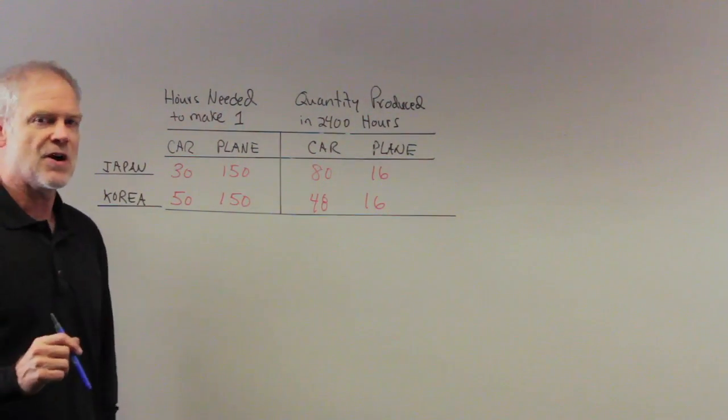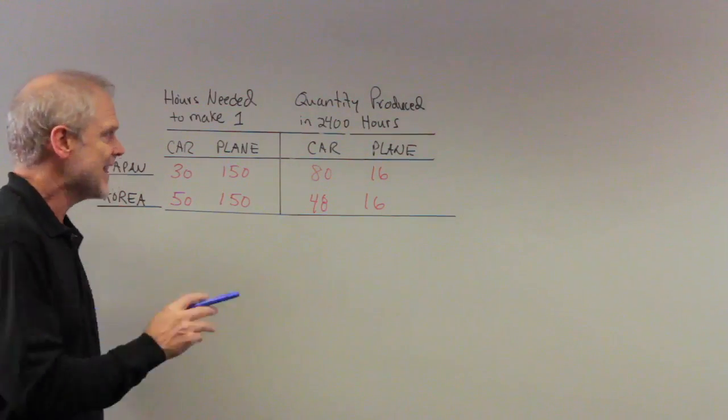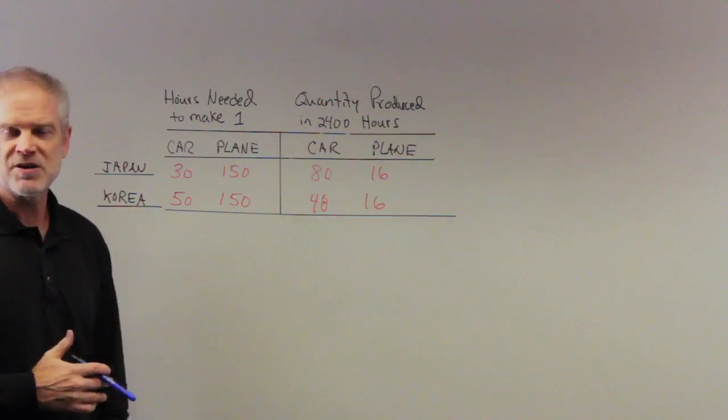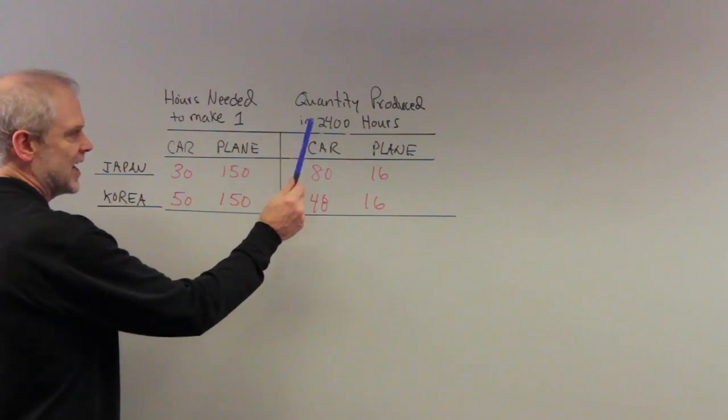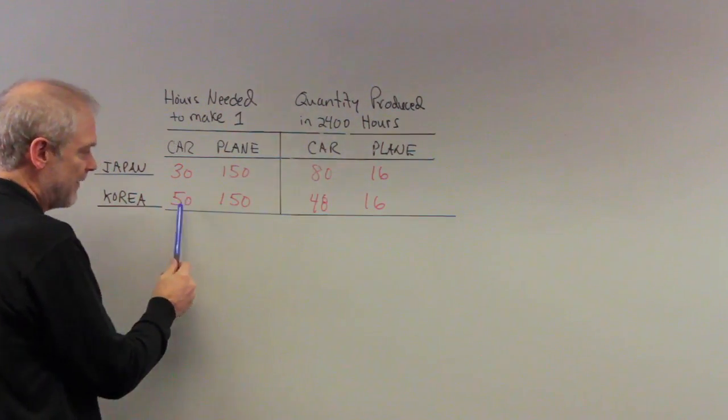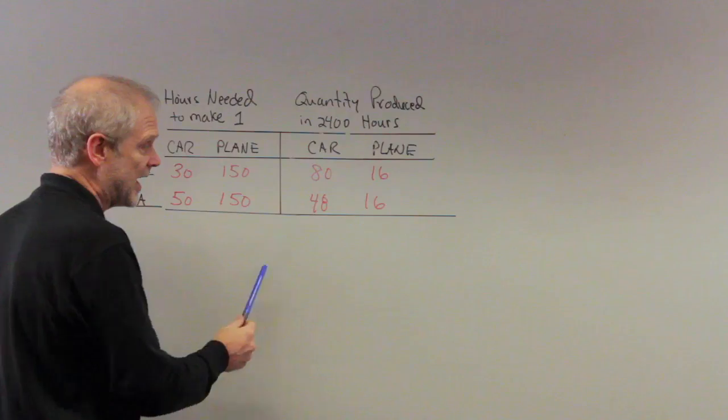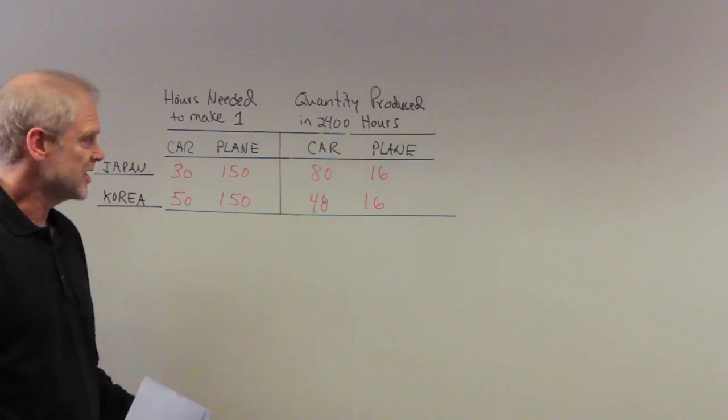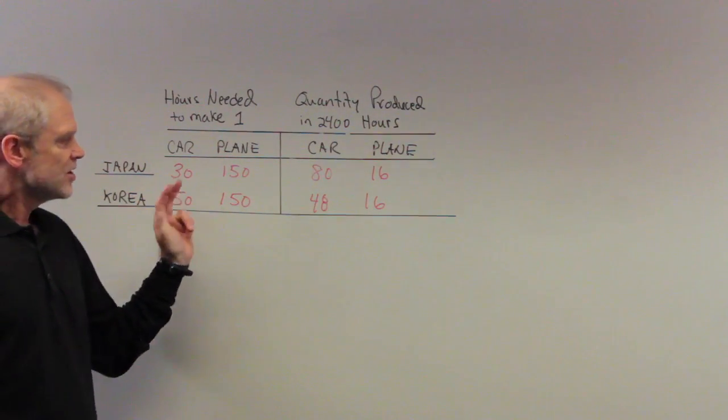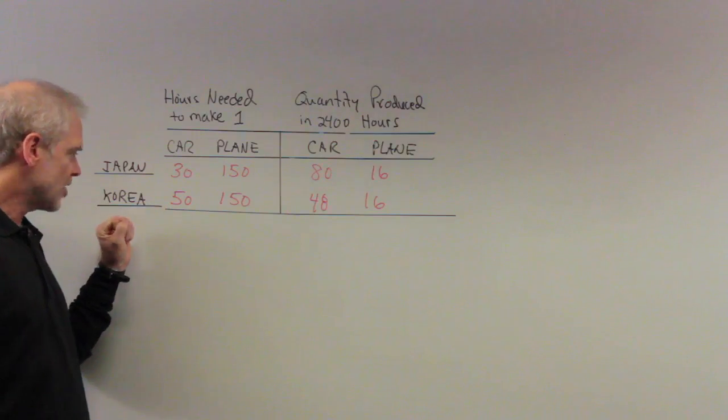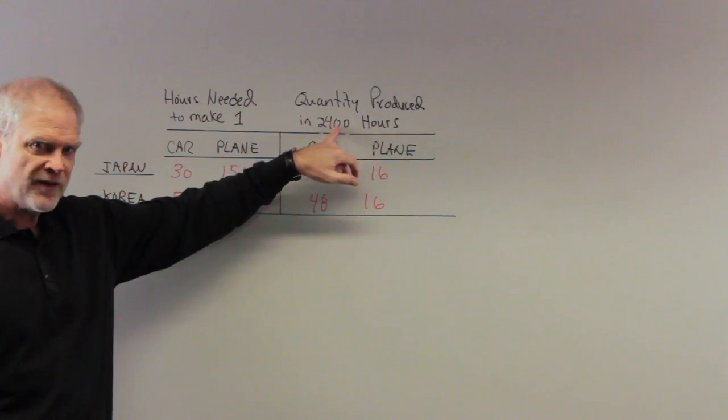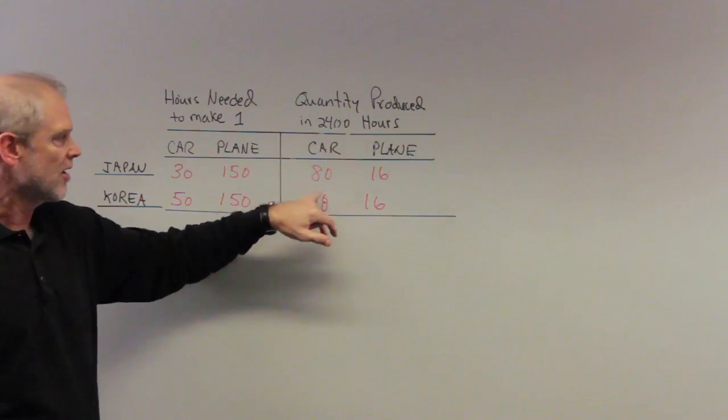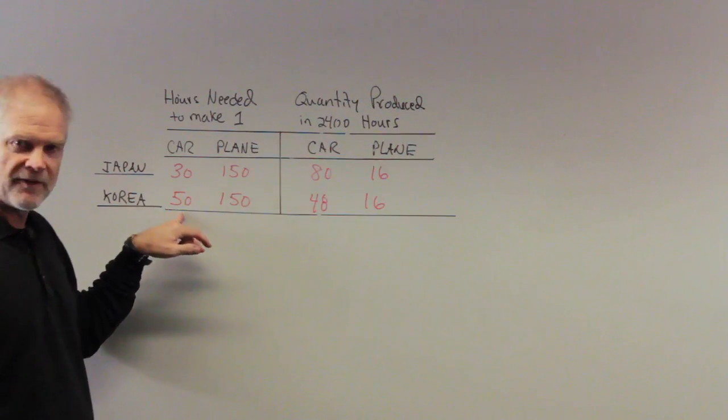How about Korea? Korea takes them 50 hours to produce a car. Again, they also only have 2,400 hours available to the entire country. So in this particular case, you would take the 2,400 divided by 50 hours per car, and that's how we get 48 cars. In other words, if Koreans devoted all their labor to the production of cars, taking 50 hours per car, 2,400 hours in total available, they could get 48 cars.